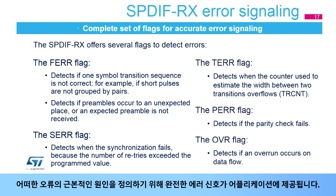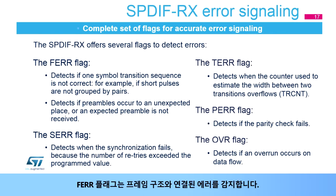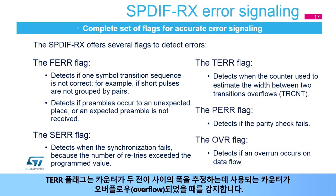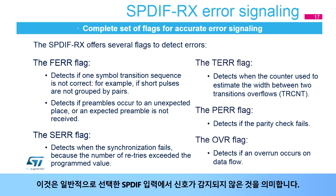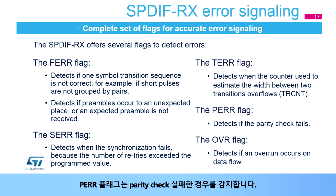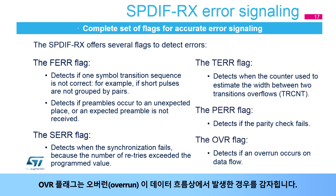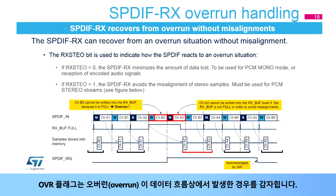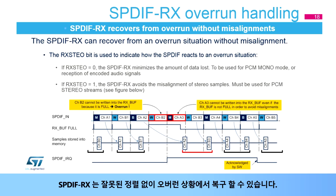A complete error signaling is provided to the application to identify the root cause of any failures. The FERR flag detects errors linked to the frame structure. The SERR flag detects synchronization failures. The TERR flag detects when the counter used to estimate the width between two transitions overflows, which generally means no signal is detected on the selected SPDIF input. The PERR flag detects if the parity check fails. The OVR flag detects if an overrun occurs on the data flow. The SPDIFRX can recover from an overrun situation without misalignment.